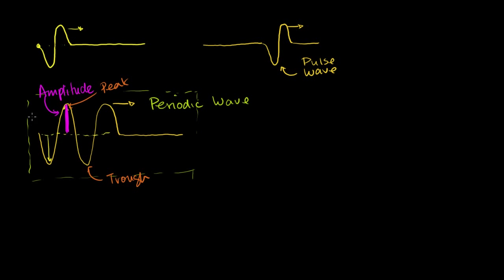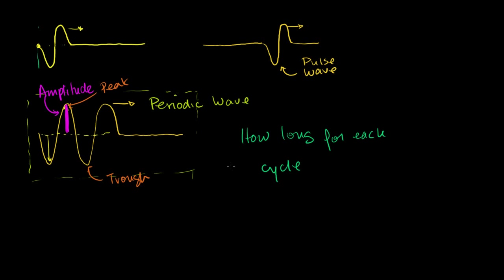The next question you might ask is: how quickly are you doing it? How long does it take to go all the way up, all the way down, and back again? How long for each cycle? A cycle is going up, down, back again. How long for each period? Each period is each repetition of the wave. This idea of how long for each cycle — we call that the period — and this is going to be a unit of time. Maybe I'm doing it every two seconds.